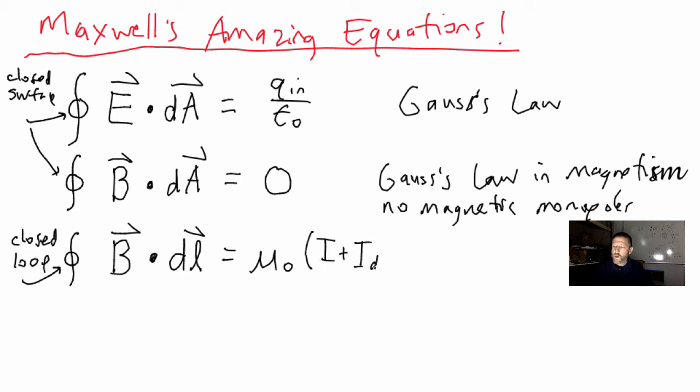You can also write that as mu naught times I plus mu naught times, this is the displacement current: it's epsilon naught times d(phi_E)/dt.